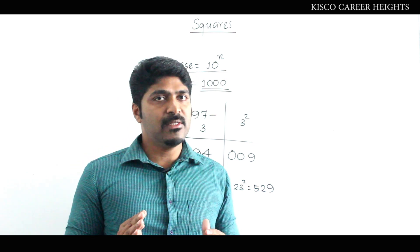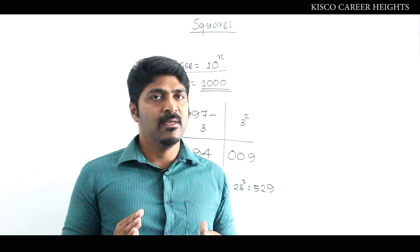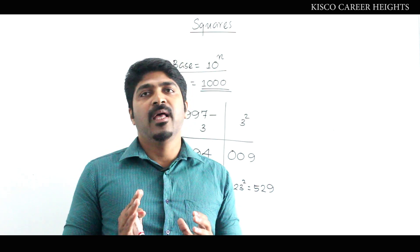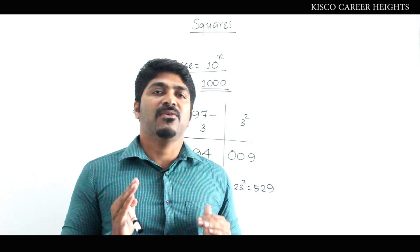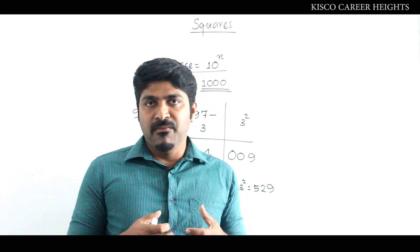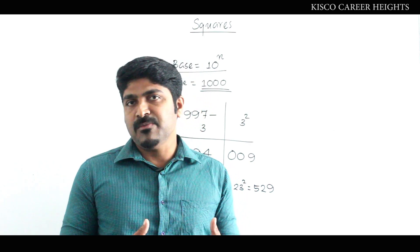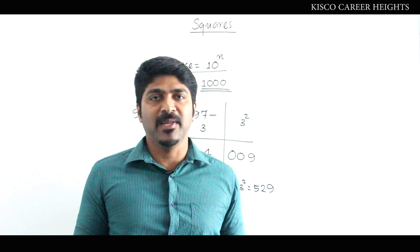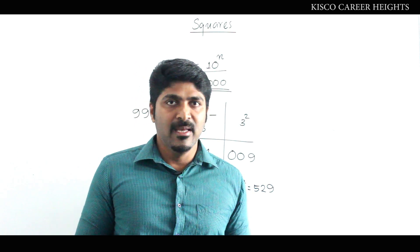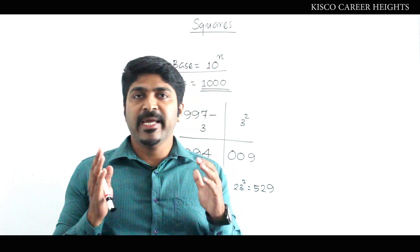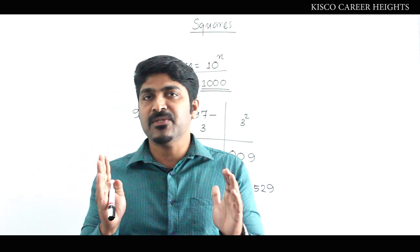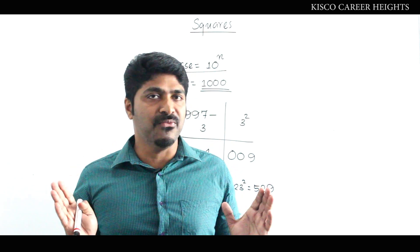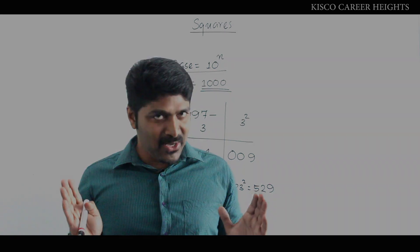There are limitations. We can apply this method only for a limited set of values, because it works best when the number is nearest to a power-of-10 base. Even so, we can apply this method for finding squares in the range from 25 to 125, and beyond with appropriate bases. Thank you.